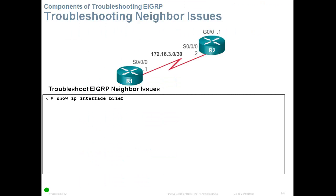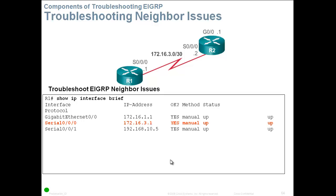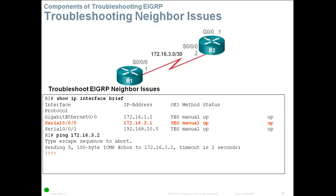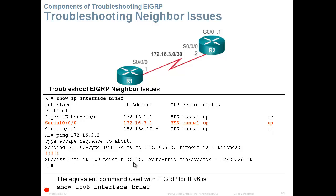For example, if we have a neighbor issue between Router 1 and Router 2, we go to Router 1 and do Show IP Interface Brief. Here we can check that the interface connecting Router 1 and Router 2 is operational — status is up and protocol is up, so Layer 1 and Layer 2 are both up, and it has an IP address. The next step is to ping the neighbor: ping 172.16.3.2. We get five exclamation marks, so the success rate is 100%. The equivalent command in EIGRP for IPv6 is Show IPv6 Interface Brief.